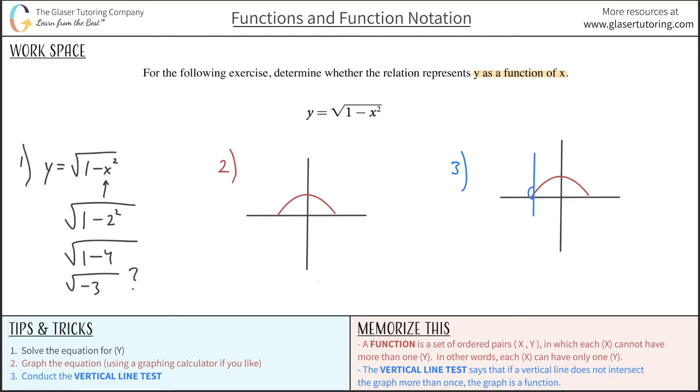So if I draw a vertical line here, it only intersects it once. If I draw it here, once. If I draw it here, only once.